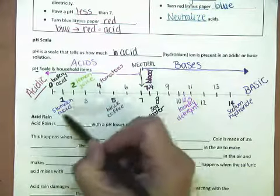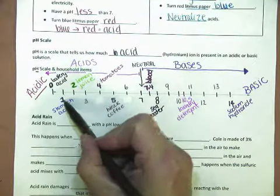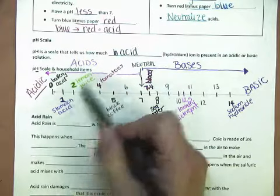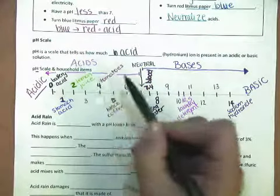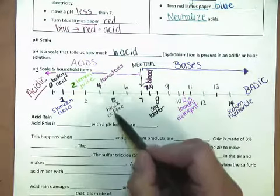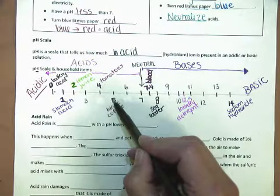Battery acid has a pH of 0. Stomach acid has a pH of 1. Lemon juice is just slightly less acidic than stomach acid. It has a pH of 2. Tomatoes are acidic. They have a pH of 4. Black coffee is acidic with a pH of 5.